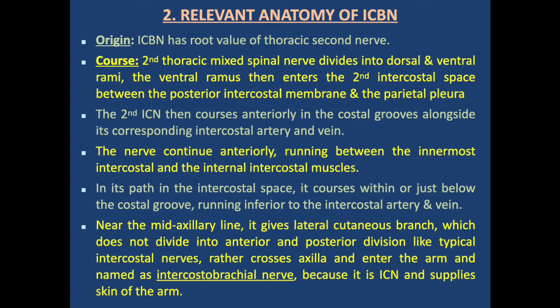Relevant anatomy: the intercostal brachial nerve has a root value of the thoracic second nerve (T2). The second thoracic mixed spinal nerve, after emerging from the spinal cord, divides into a ventral ramus and a dorsal ramus. The dorsal ramus supplies the back muscles and skin, while the ventral ramus enters the second intercostal space between the posterior intercostal membrane and parietal pleura.